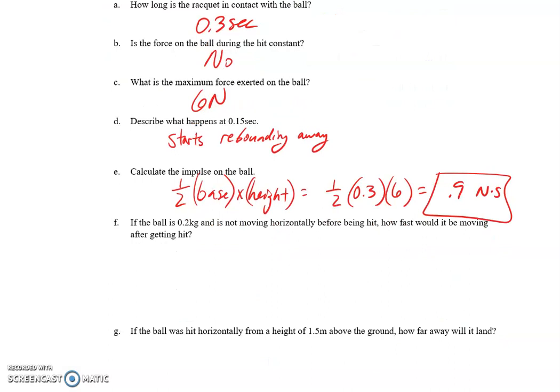If the ball is 0.2 kilograms and not moving horizontally before being hit, how fast would it be moving after getting hit? So the hit, the impulse on the ball from the hit, is going to equal the change in momentum of the ball. So we already found the impulse in the last question. It was 0.9.